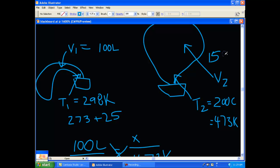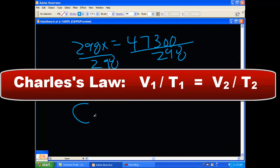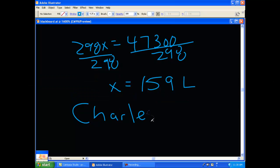So V2 is 159 liters. We knew automatically with this problem that if you have an increase in temperature, of course, you're going to have an increase in volume. And all we did was determine what this is. And this is actually called Charles' Law.